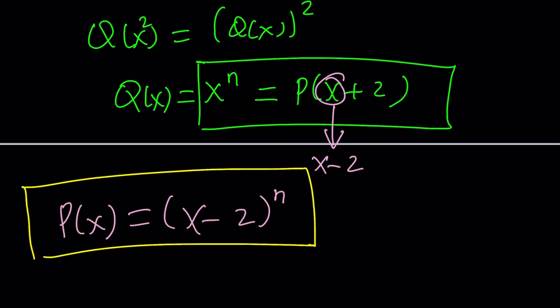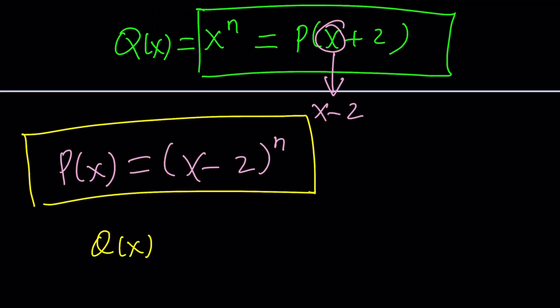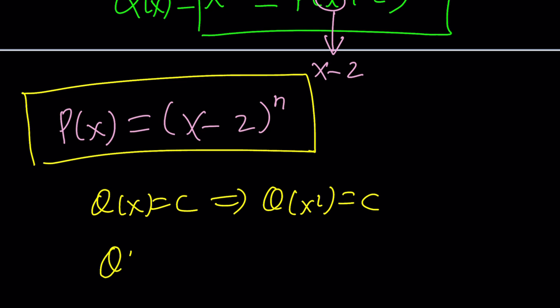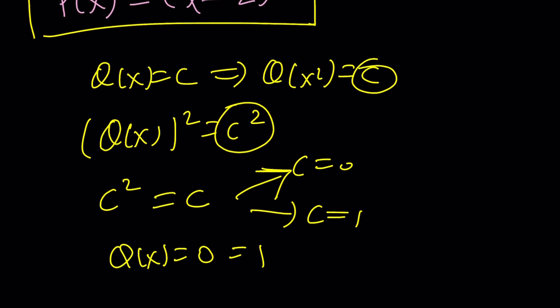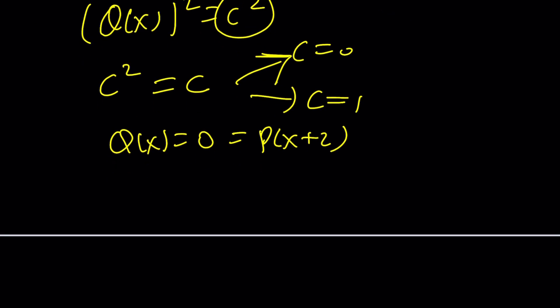Now, what happens if Q is a constant? That's a good question. If Q is a constant, then Q(x²) is also going to be a constant c. But Q(x)² will be c². So we basically want c to be c². So c² equals c implies c is 0 or c is 1. Now, obviously, the zero polynomial definitely satisfies this equation. But what does that mean? If Q is 0, then P is going to be identically 0. What would happen if Q is 1? That means P is also going to be 1 because it's a constant. And constant polynomials will satisfy it as long as c has these values.